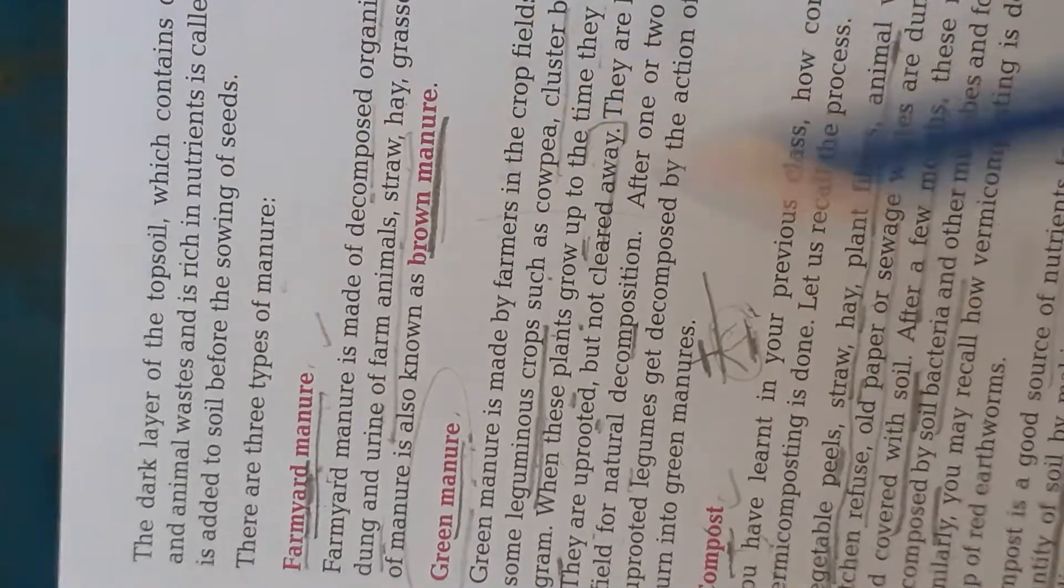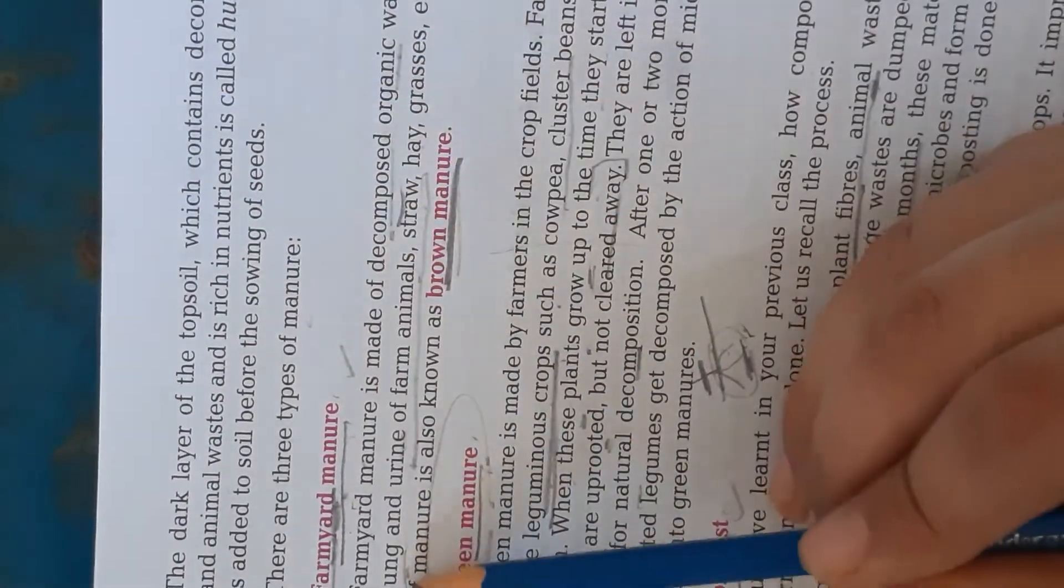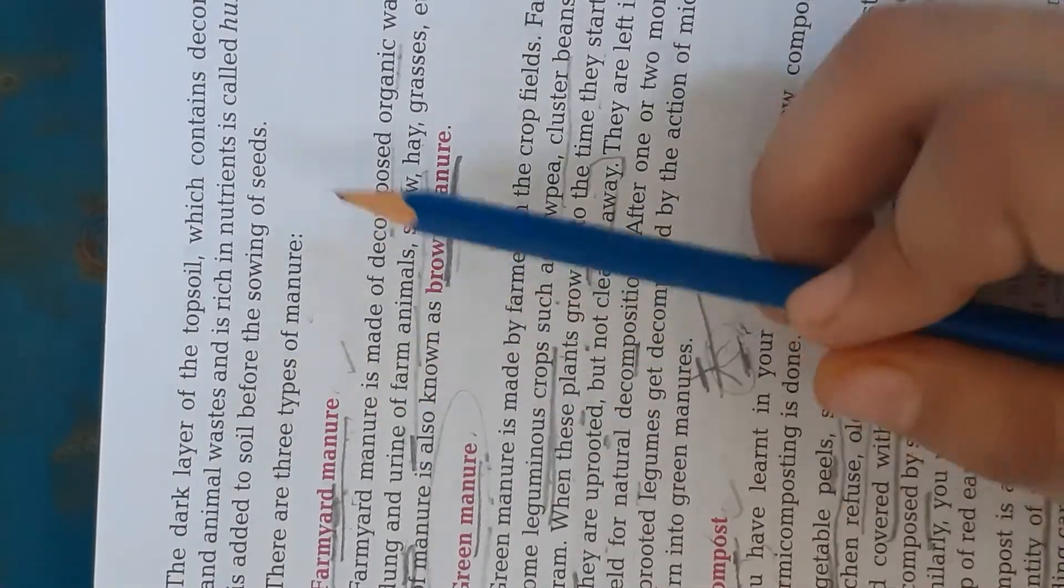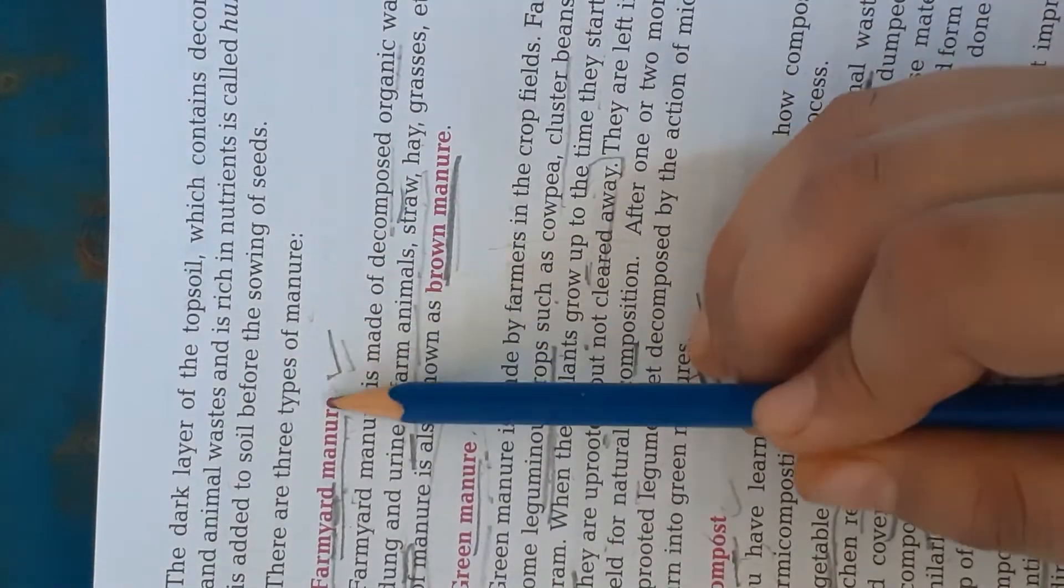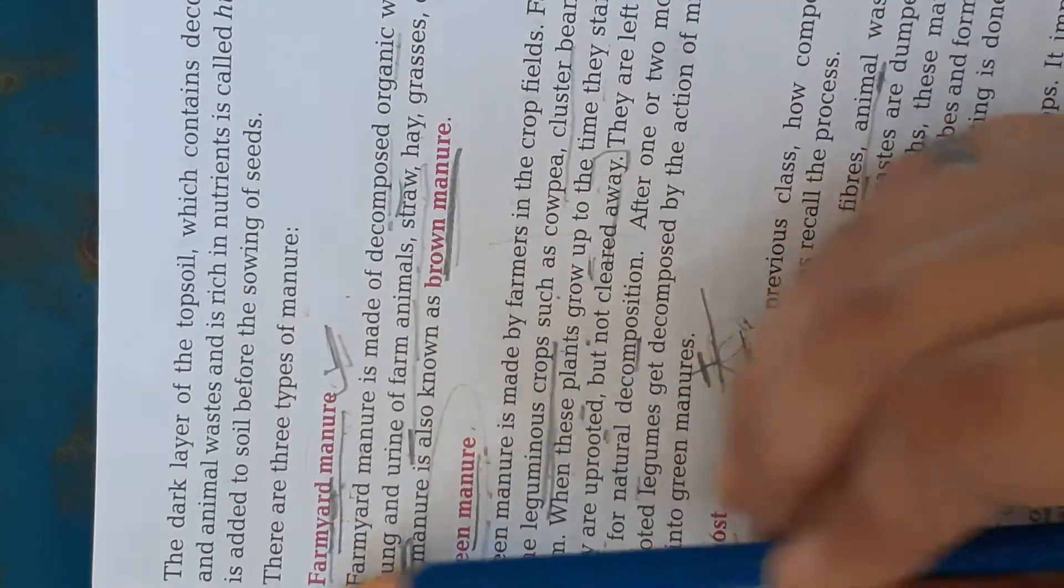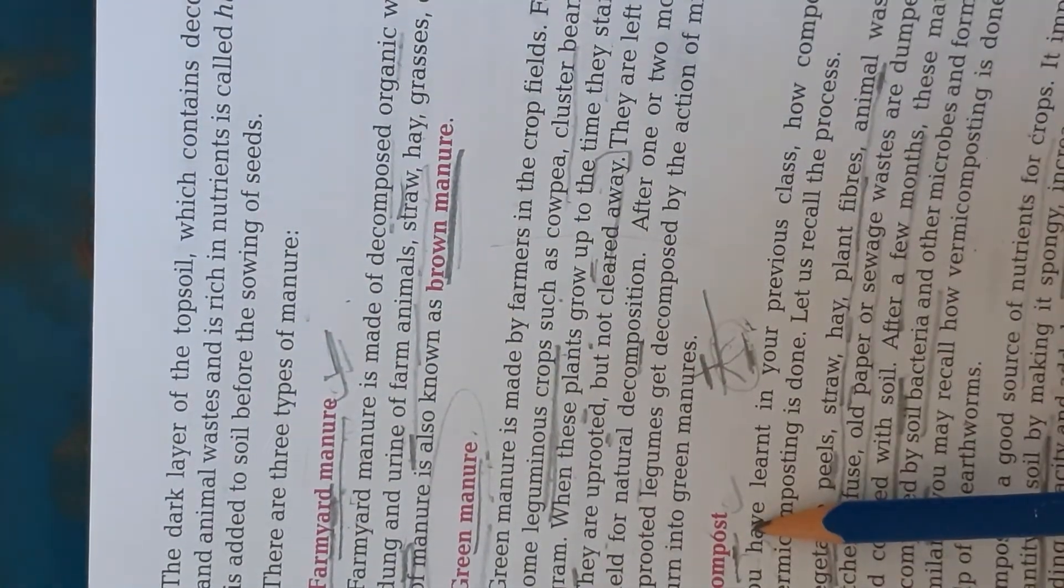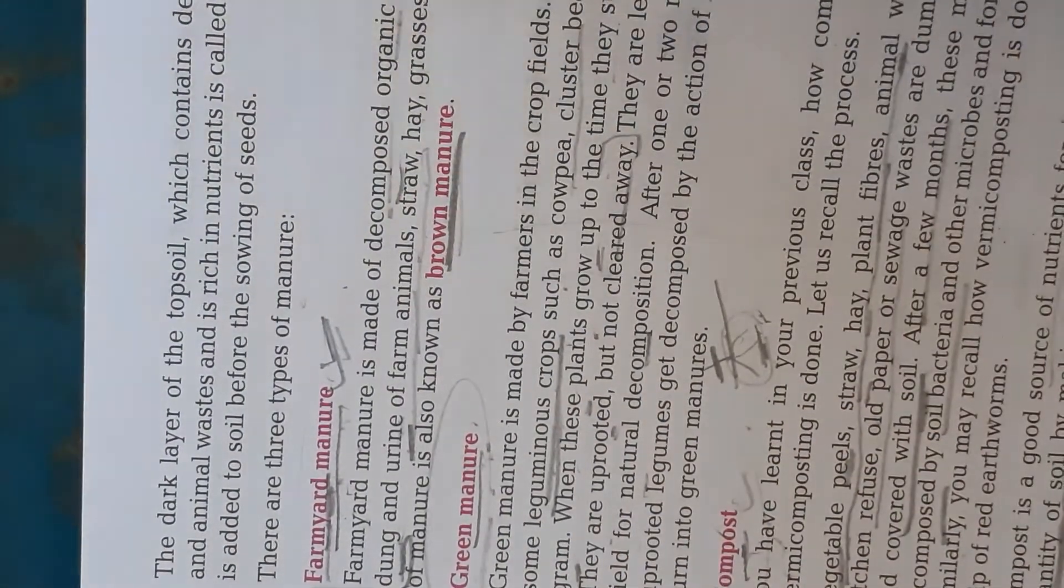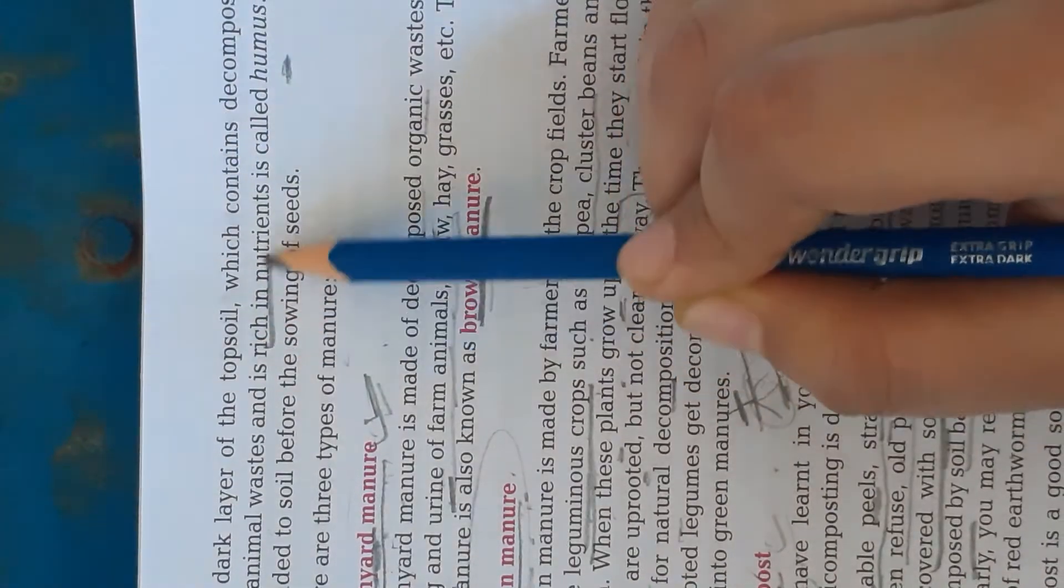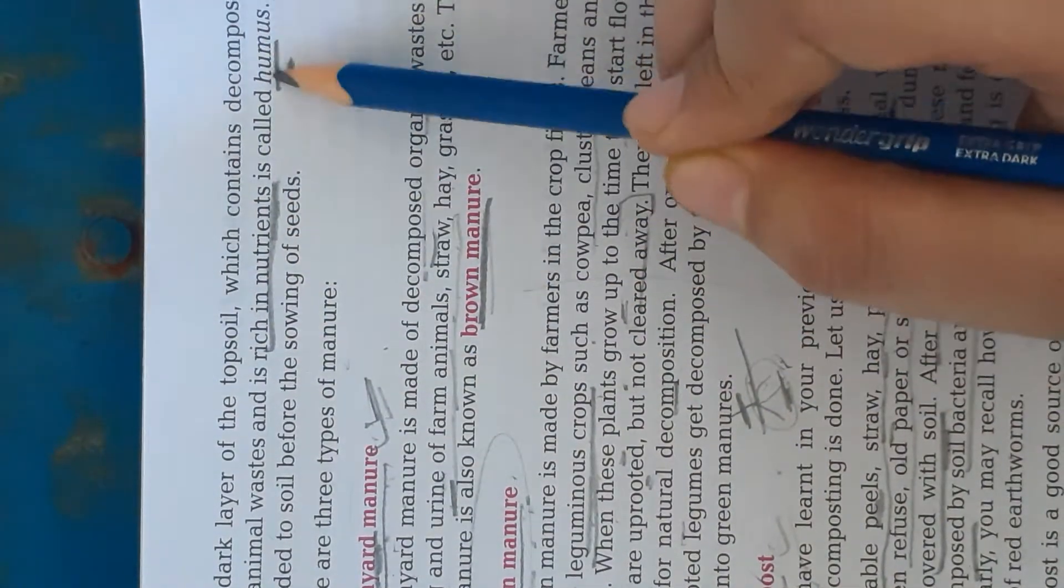Farmyard manure which is decomposed organic waste of dung, urine, which is the waste of animals. These are all types of manure. Why are we using them? Because it increases the humus. Humus which is rich in nutrients is known as humus.